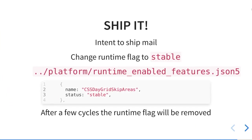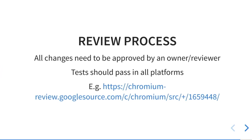At some point, eventually, we need to ship the feature. We have been implementing it, fixing bugs, everything is stable, and we want to ship it. The process is very simple on the technical part — you just need to change the status to stable. But you need to send an intent-to-ship to the mailing list explaining why you can ship this, if it's ready or not. And eventually when it gets to the browser after a few release cycles, the runtime flag will be removed because you're not going to use it anymore.